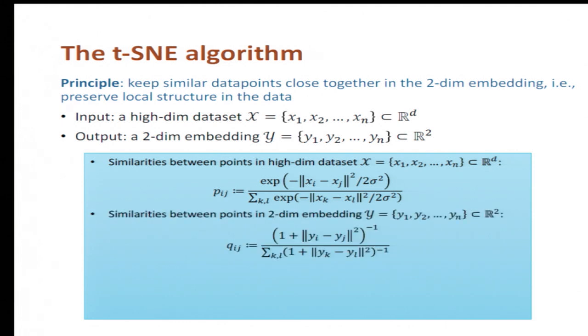And similarly in the two-dimensional embedding, we also define a similarity measure Qij, which is proportional to the inverse of one plus the squared distance between Yi and Yj.